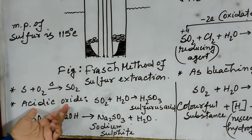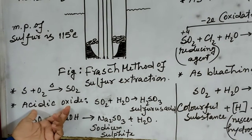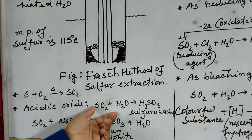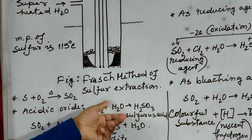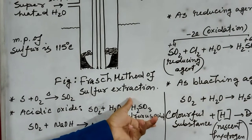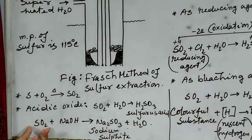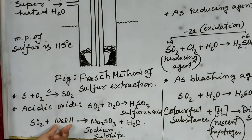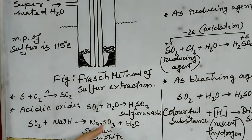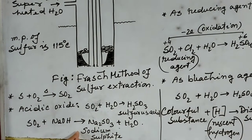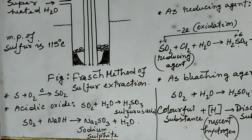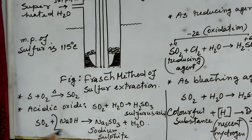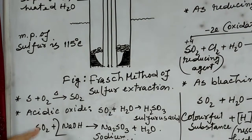Sulphur dioxide is an acidic oxide. Because sulphur dioxide reacts with water to produce sulphurous acid. And it also reacts with a base — sodium hydroxide — to produce salt and water. The salt produced here is actually sodium hydrogen sulphate. To balance the equation, you can write the coefficient here as well.